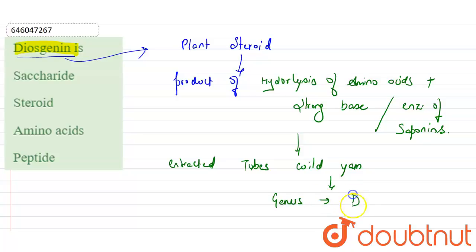Dioscorea. It is a genus of Dioscorea. So coming to the options, diogenin - the correct answer is steroid, because...